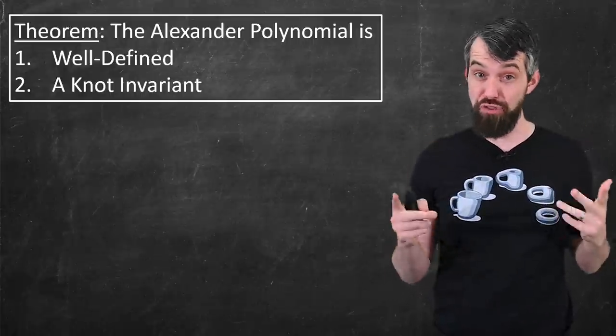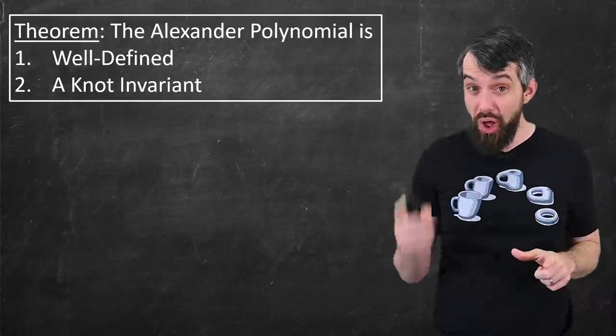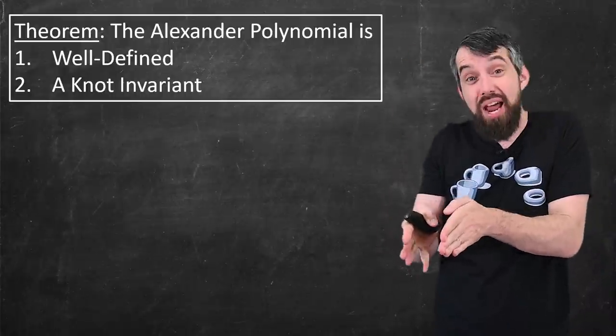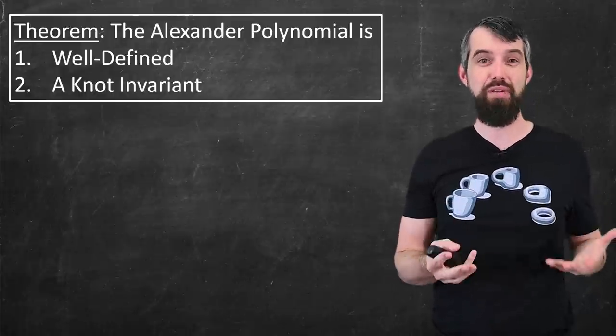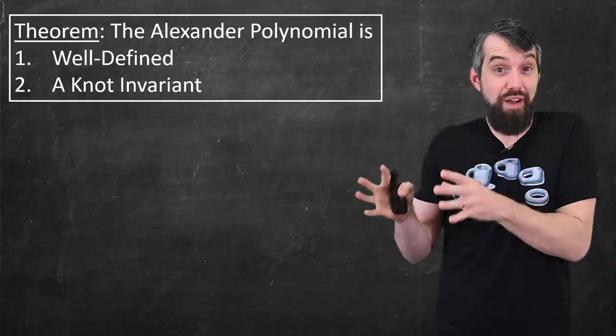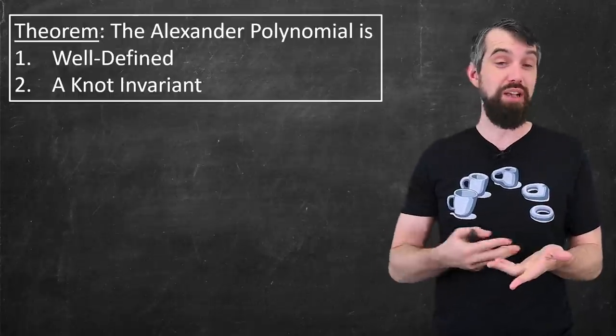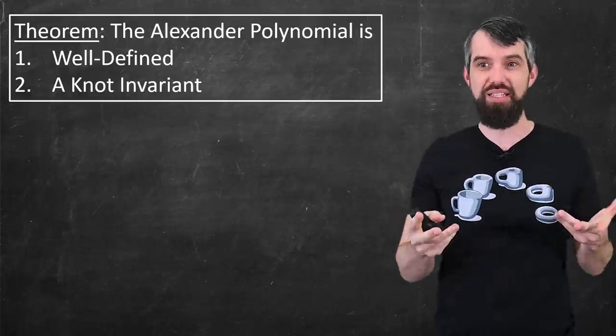There were a lot of choices involved. I could label the regions differently. I could label the crossings differently. My choice of which two columns to cut out, I could have done that differently. So basically, the first thing you have to prove is that under all of those choices, you get a well defined polynomial. Actually, what you get is well defined up to possibly a multiplication by negative t to some particular power. But other than this, it's a well defined polynomial.